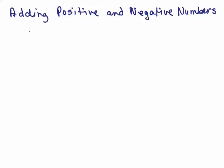First of all, what about if we took a positive number like 3 and we represented it with just some plus signs — so if there are 3 plus signs that means positive 3. And let's say I wanted to represent negative 5, I could represent that with 5 negative signs.